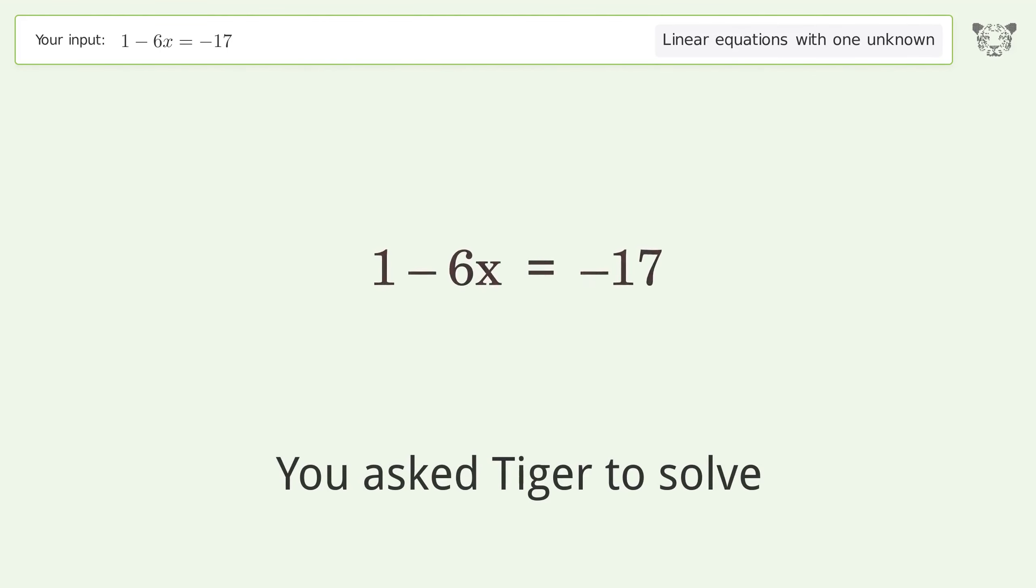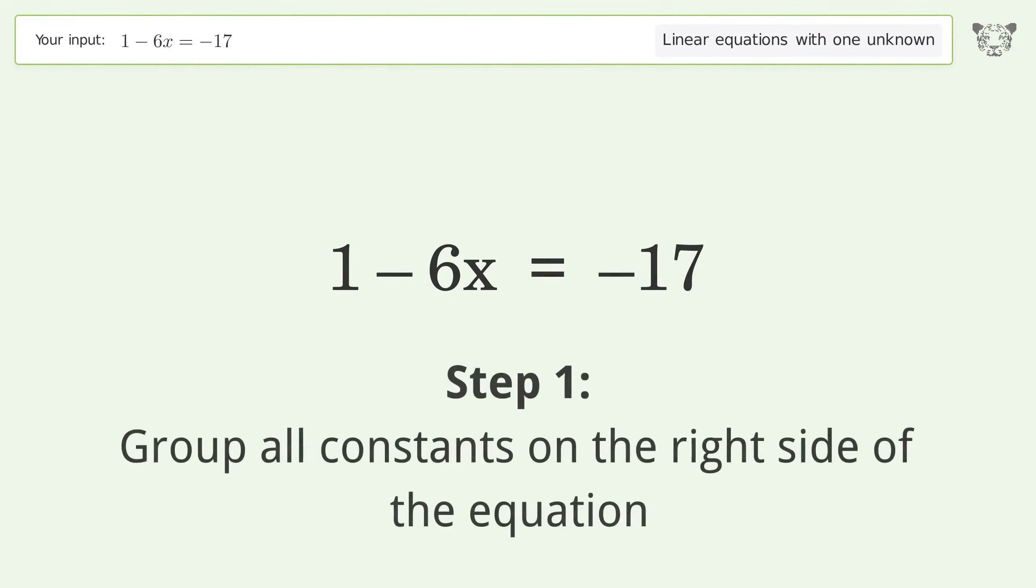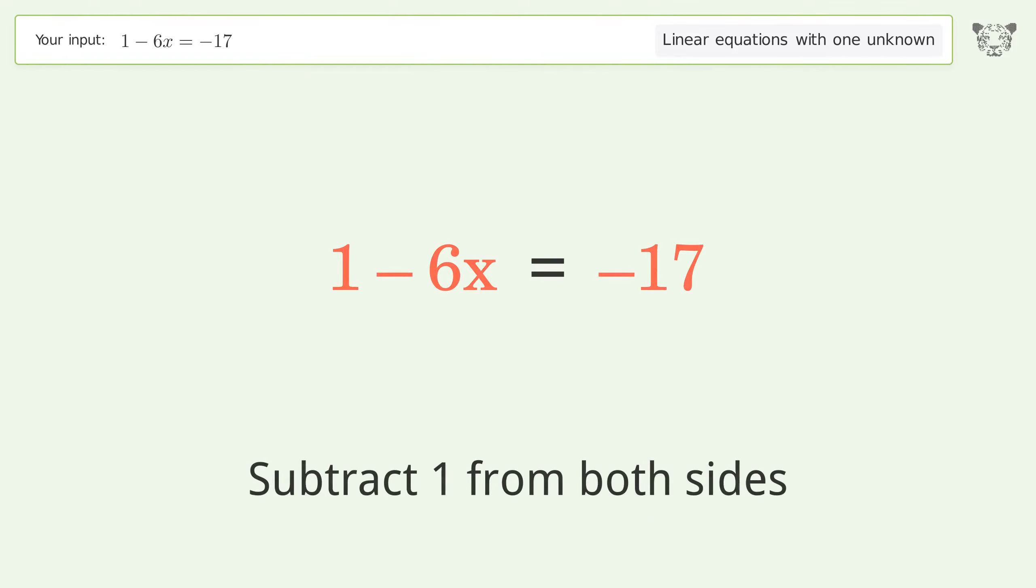You asked Tiger to solve this. This deals with linear equations with one unknown. The final result is x equals 3. Let's solve it step by step. Group all constants on the right side of the equation. Subtract 1 from both sides.